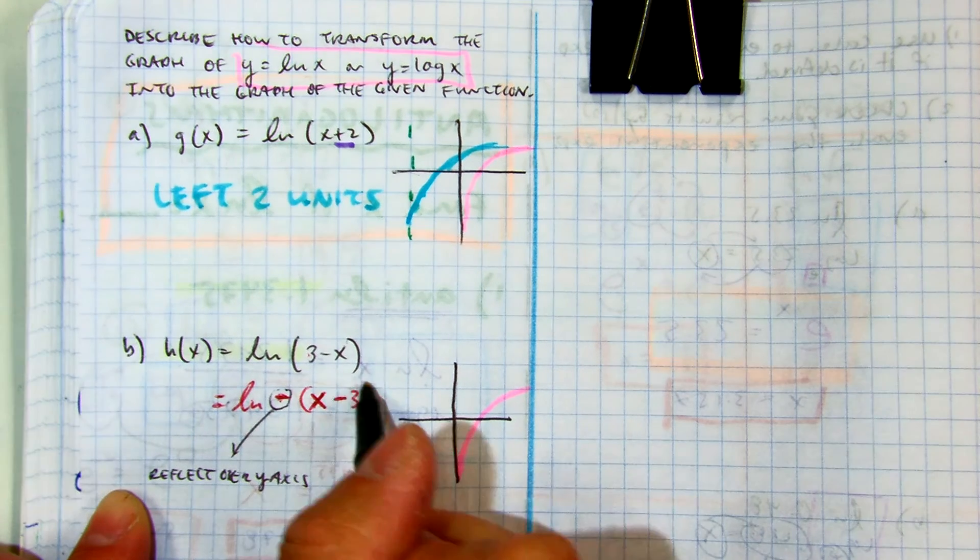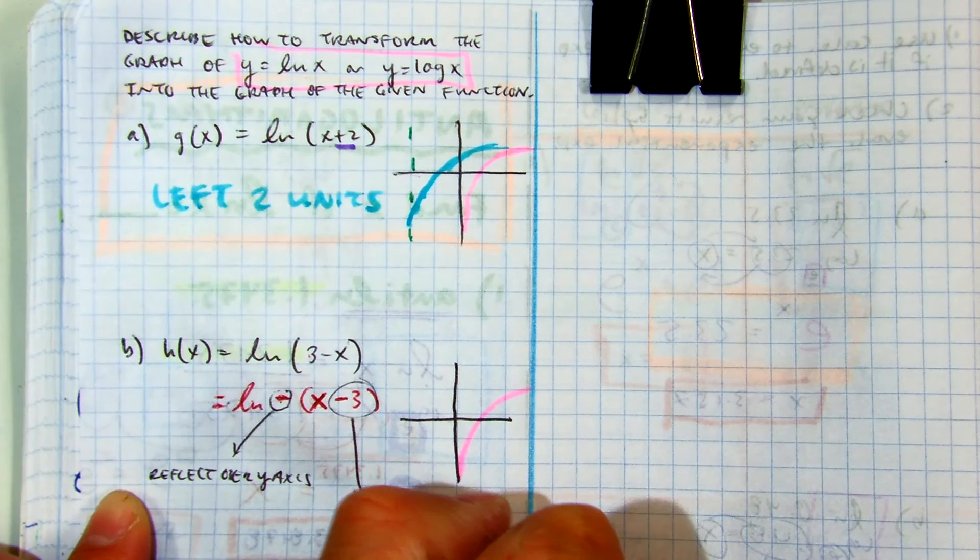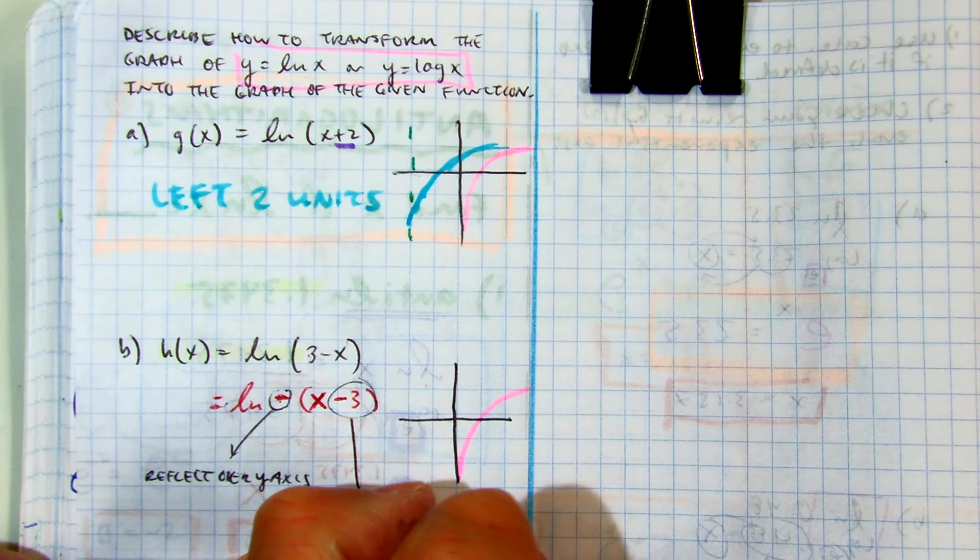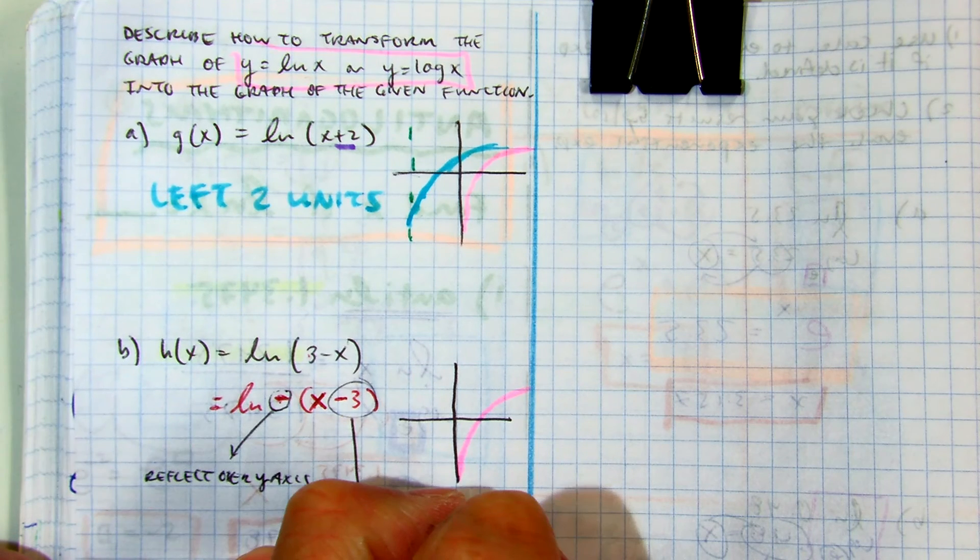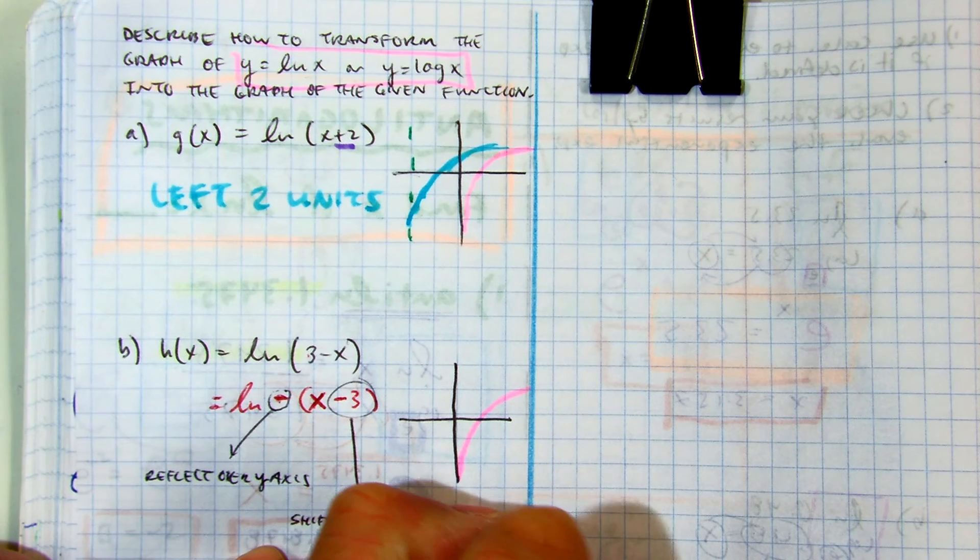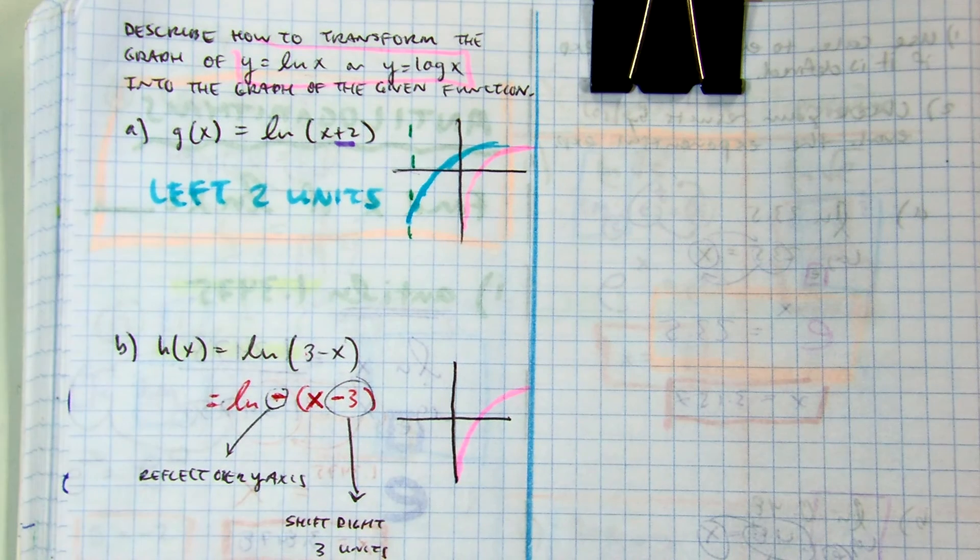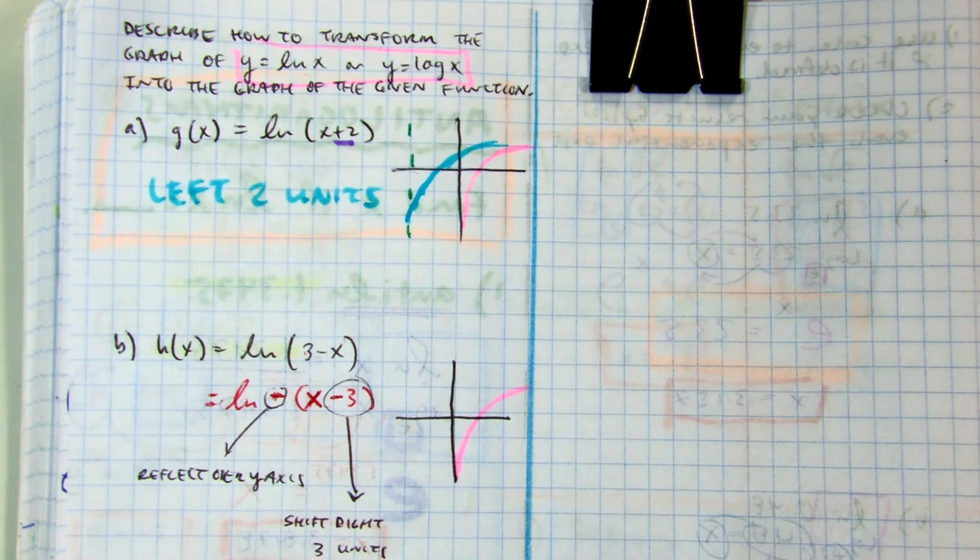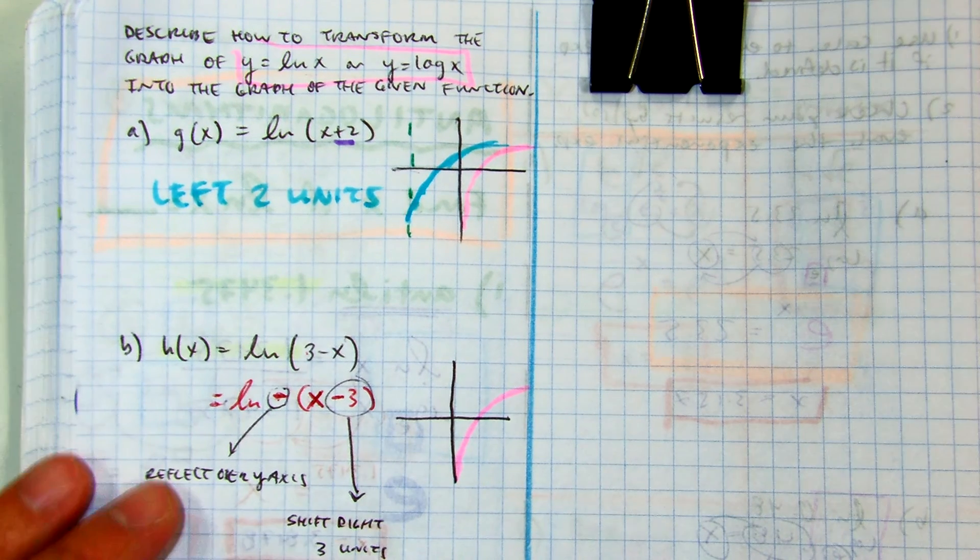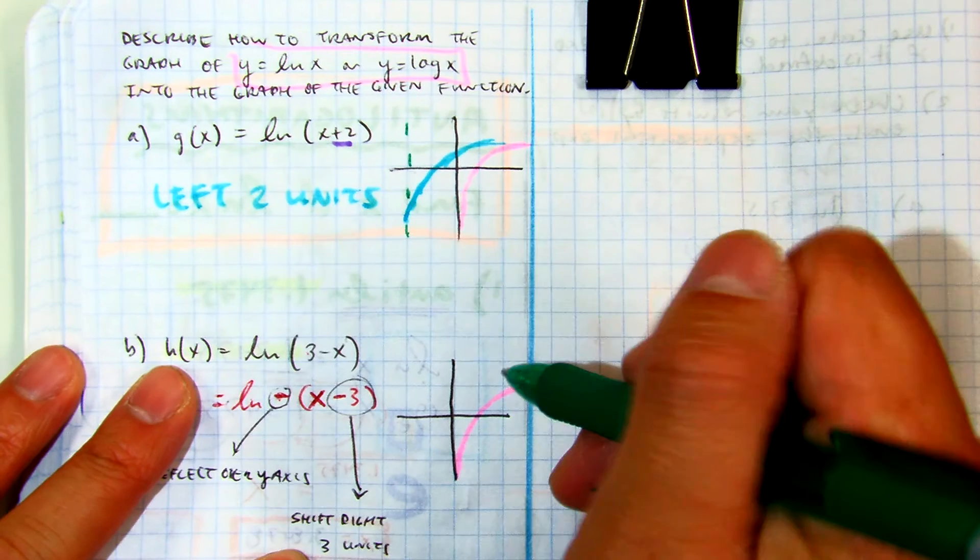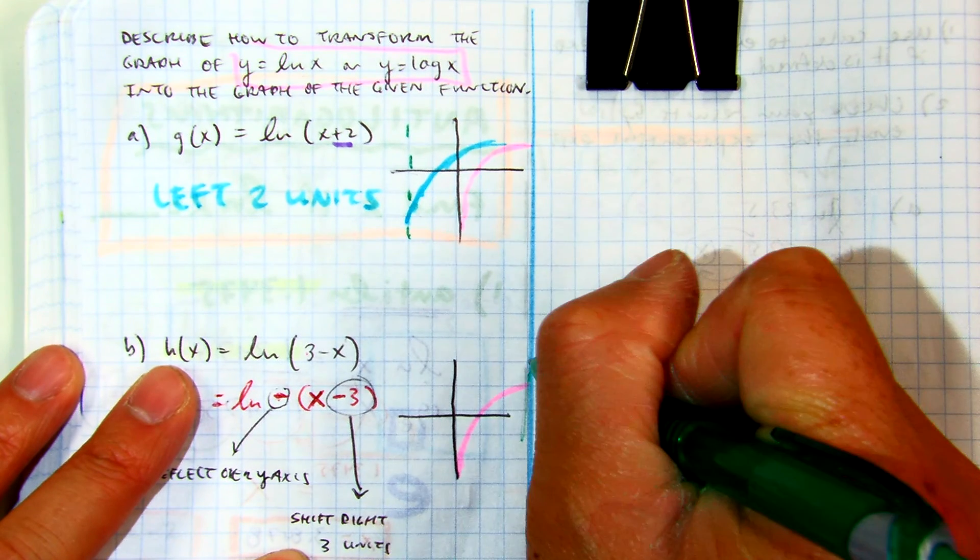And this one is what? Shifted where? How many units? So you can move it to the right three units. One, two, three. So maybe my asymptote looks like that.